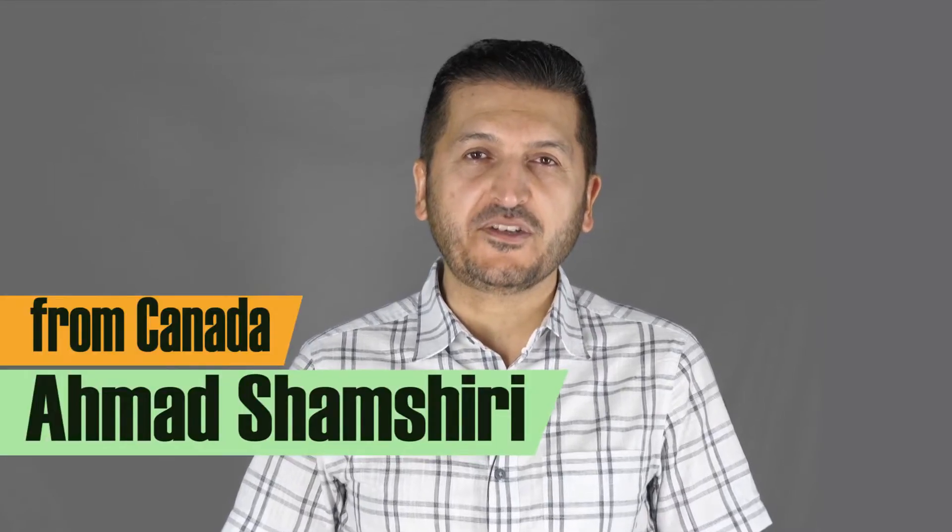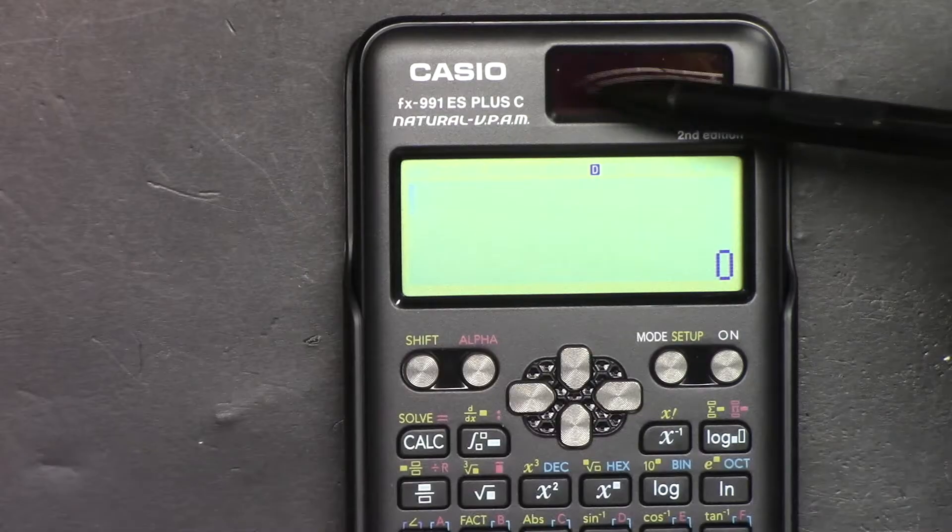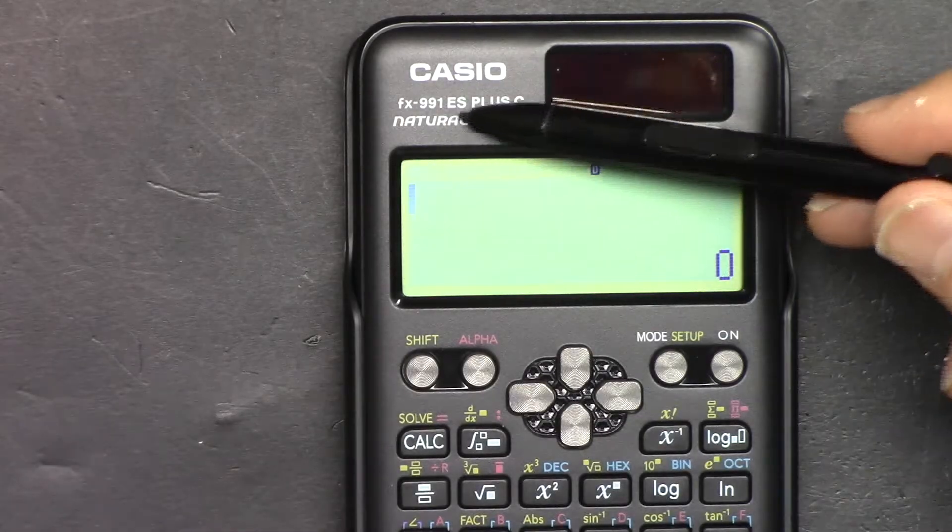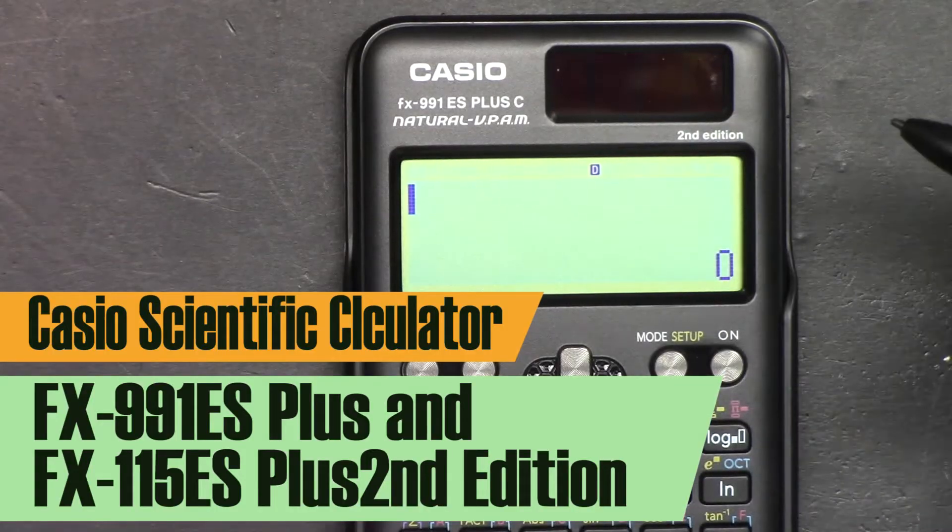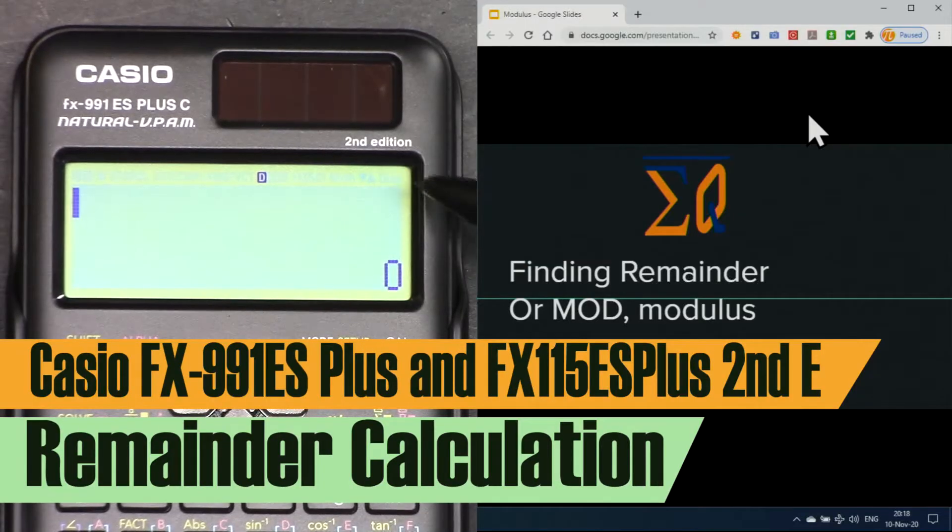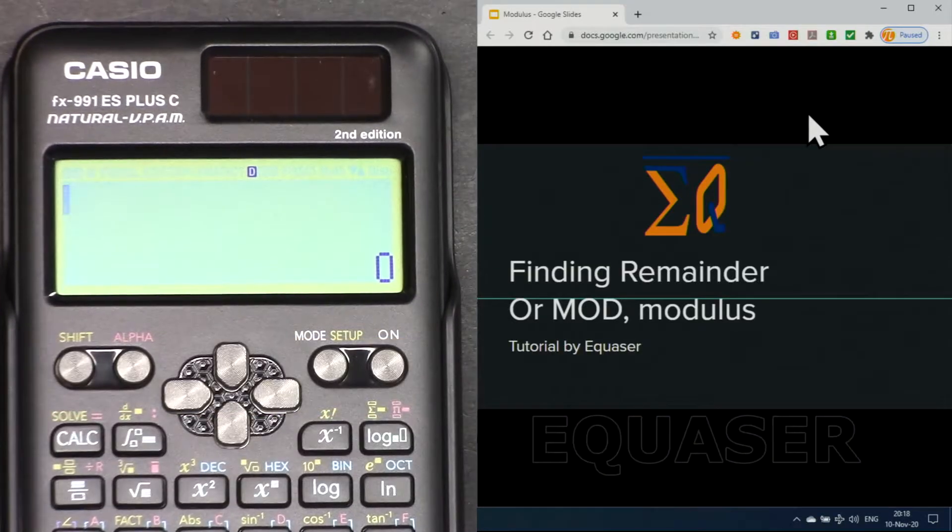Hi, welcome to a video tutorial from Equasor. My name is Ahmad Shamshiri. In this video we are going to use this Casio FX991ES Plus second edition scientific calculator to find remainder, mod or modulus of a division. Let's get started with this.